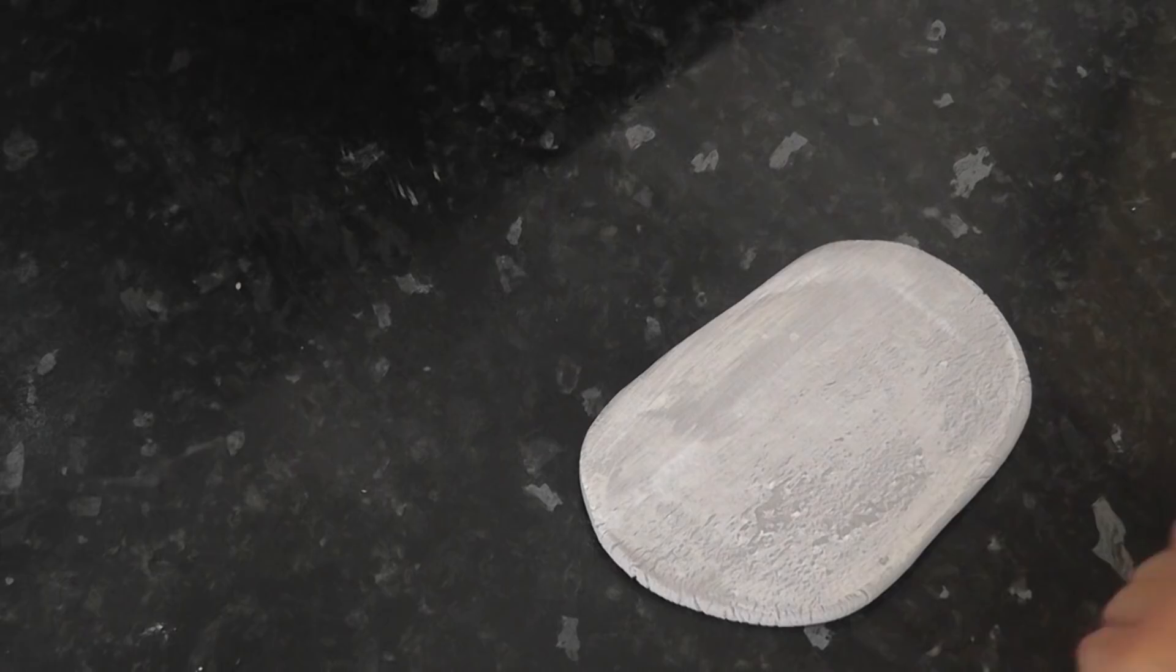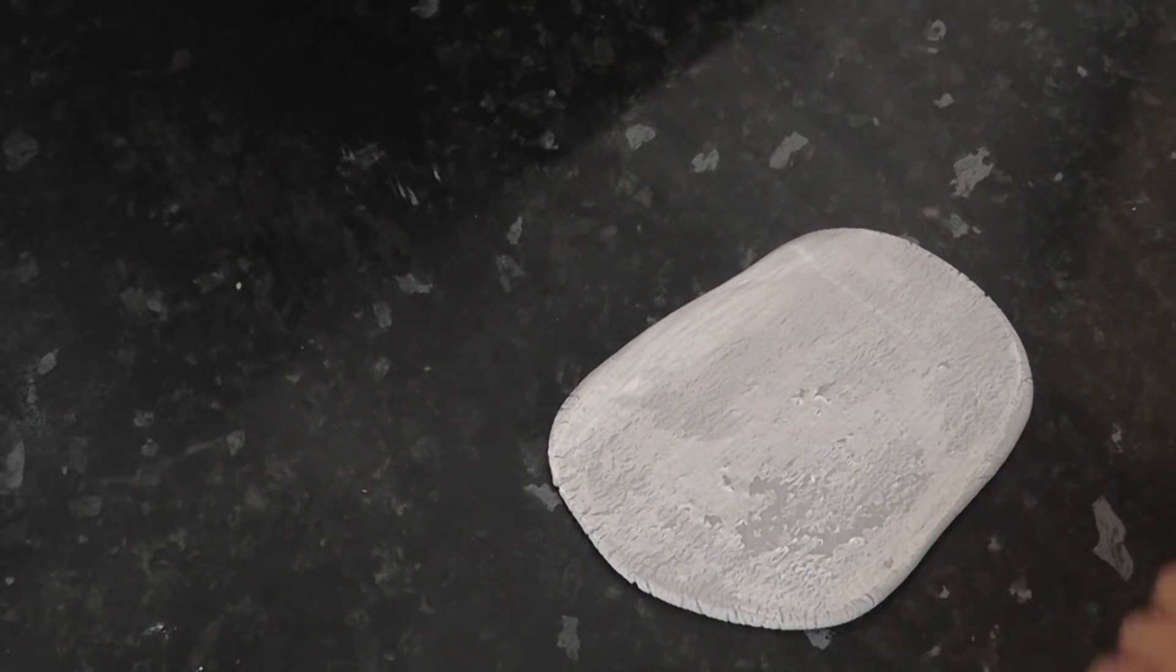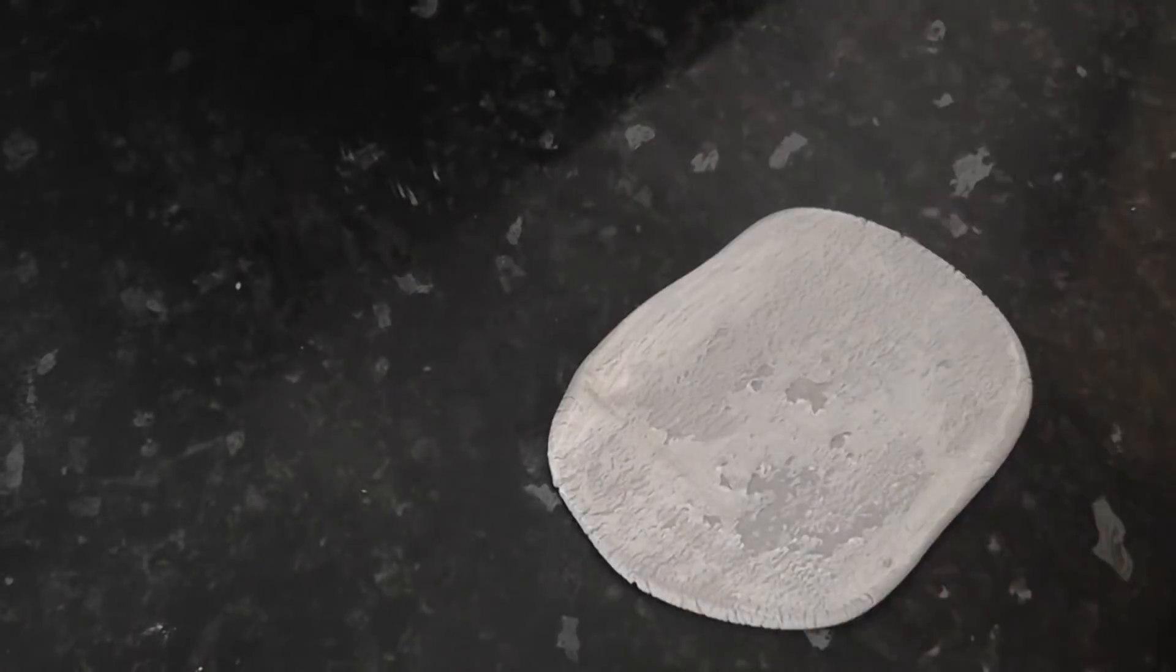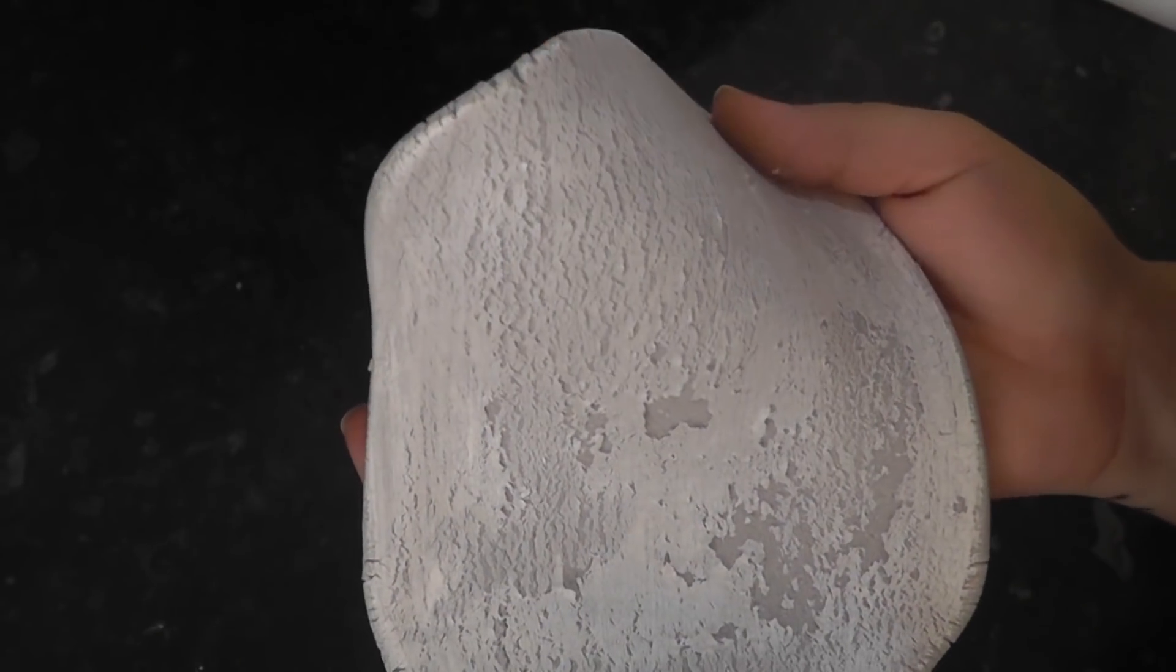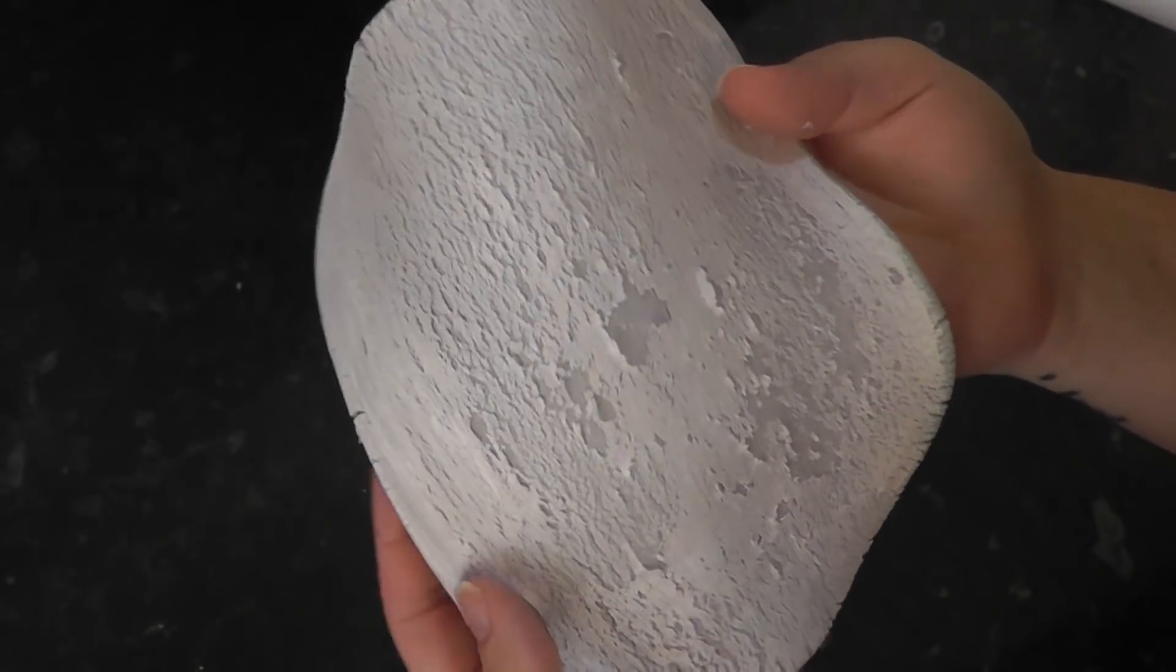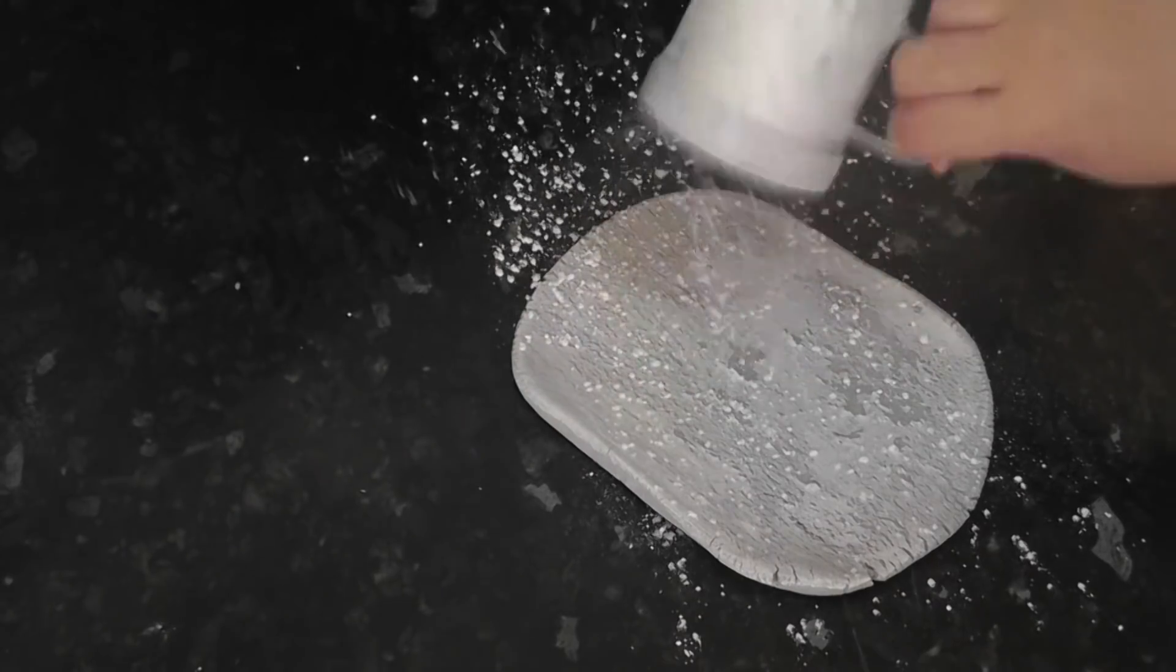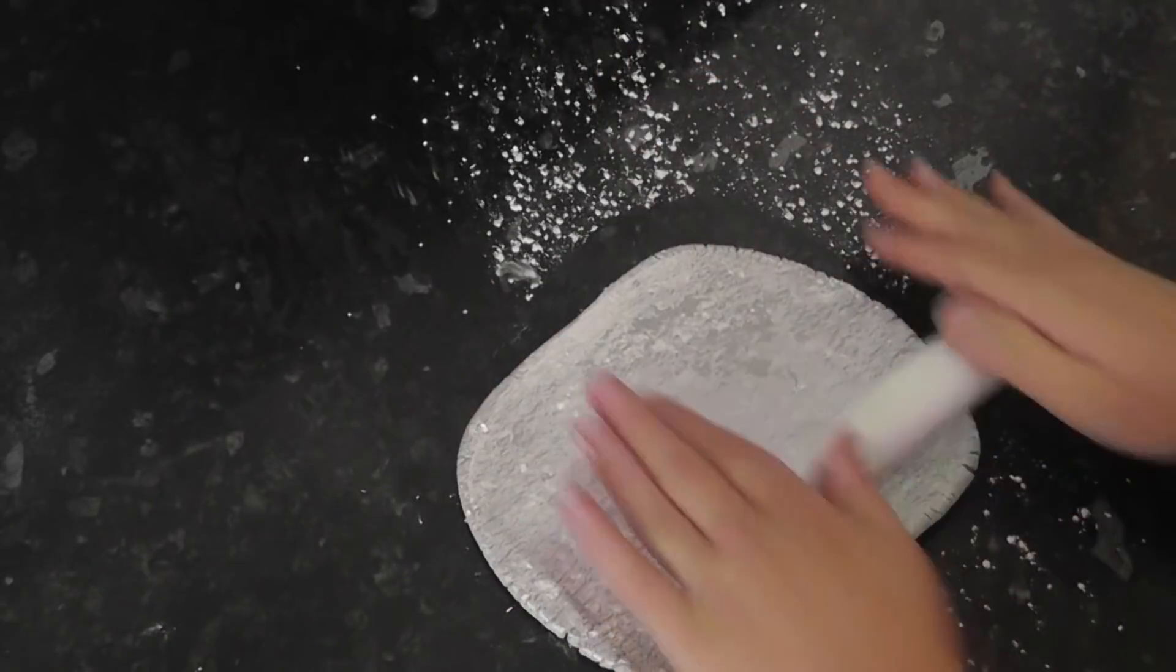My paint was ever so slightly still damp underneath and it's sticking to the rolling pin, but I quite like the effect it gives as it pulls bits away to reveal the grey underneath. Add a little icing sugar if it gets too sticky. Roll it to your desired thickness.